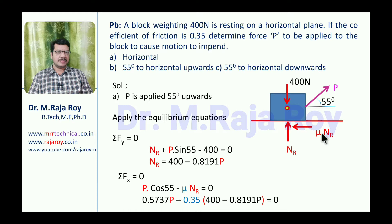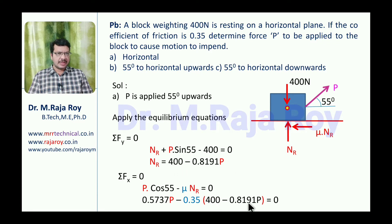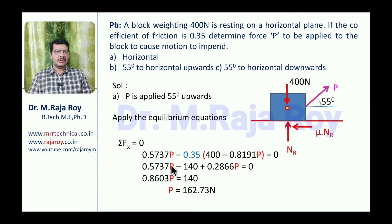Applying sigma Fx = 0: P*cos55 (positive x) minus mu*Nr (negative x) = 0. Substituting cos55 = 0.5737 and Nr = 400 − 0.8191P, then simplifying, we get P = 162.73 N. When applying force at an upward angle, a higher force is required compared to the horizontal case of 140 N.